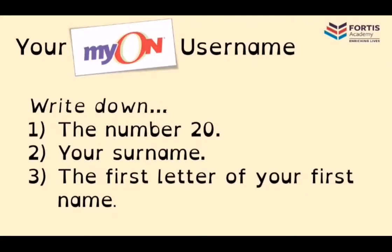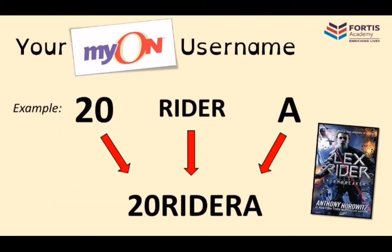For your username, this is what you need to do: if you're in Year 7, you need to write down the number 20, then your surname as it appears on your timetable, and then the first letter of your first name. Put those details together - so if we happen to be Alex Rider from Anthony Horowitz's Stormbreaker series, we'd be writing down '20Rider' for our surname and 'A' for Alex, putting those together to make up our username.